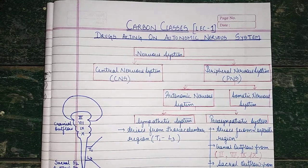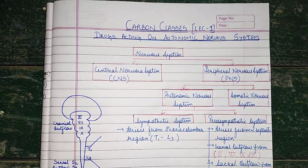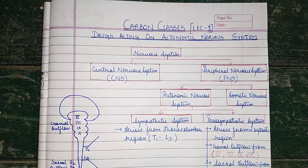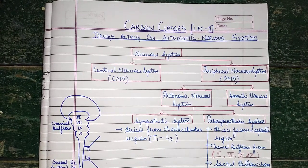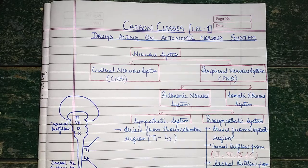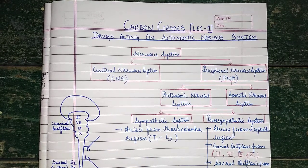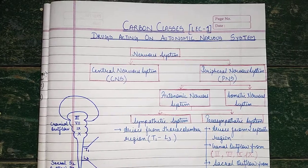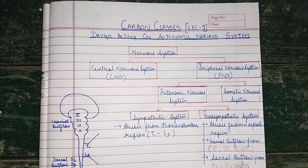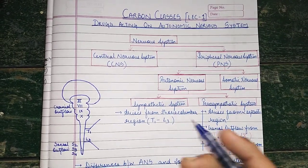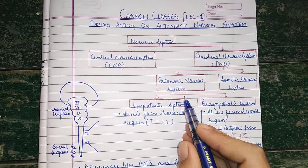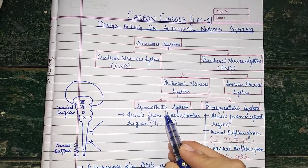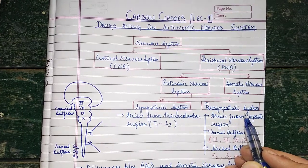Starting with this first lecture, we are going to talk about the parts of the nervous system. The nervous system has two parts: your central nervous system and your peripheral nervous system. The central nervous system consists of the brain and spinal cord. The peripheral nervous system contains your autonomic nervous system and your somatic nervous system. The autonomic nervous system further contains the sympathetic system and the parasympathetic system.